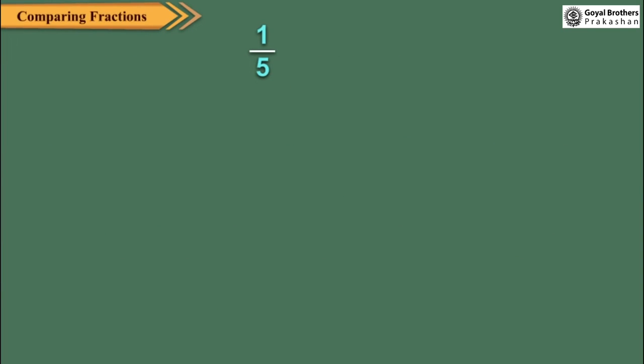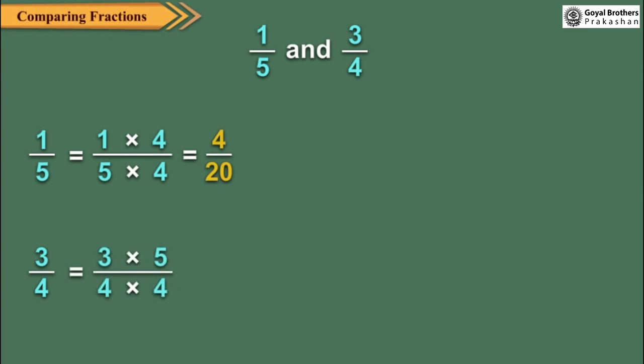Let us compare 1 upon 5 and 3 upon 4. First, we take the LCM of 5 and 4 which is 20. Now, changing the given fractions into their equivalent fractions with denominator as 20, we get...